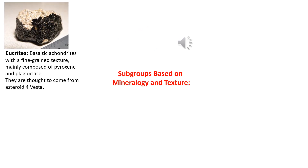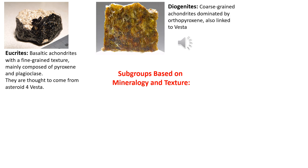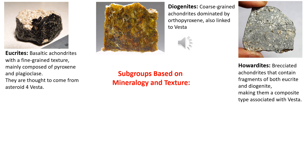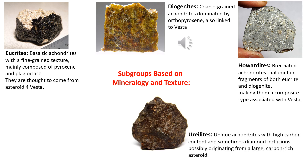Subgroups based on mineralogy and texture. Eucrites: basaltic achondrites with a fine-grained texture, mainly composed of pyroxene and plagioclase, thought to come from Asteroid 4 Vesta. Diogenites: coarse-grained achondrites dominated by orthopyroxene, also linked to Vesta. Howardites: brecciated achondrites that contain fragments of both eucrite and diogenite, making them a composite type associated with Vesta. Ureilites: unique achondrites with high carbon content and sometimes diamond inclusions, possibly originating from a large carbon-rich asteroid.